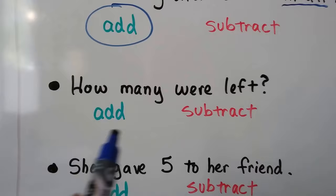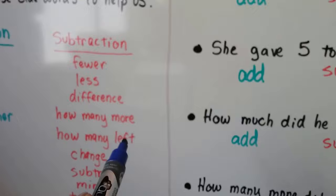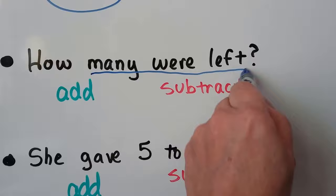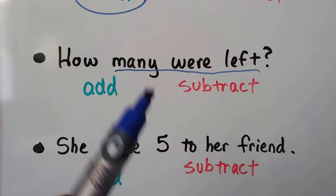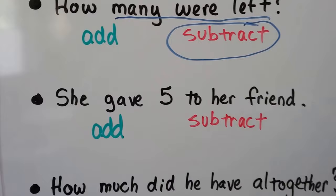How about this one: 'How many were left?' 'How many left' is a clue word for subtraction. It tells us that we need to find the difference between two amounts. There was an amount, maybe some were taken away, and they want to know how many were left. So that means we're going to subtract to find the difference.